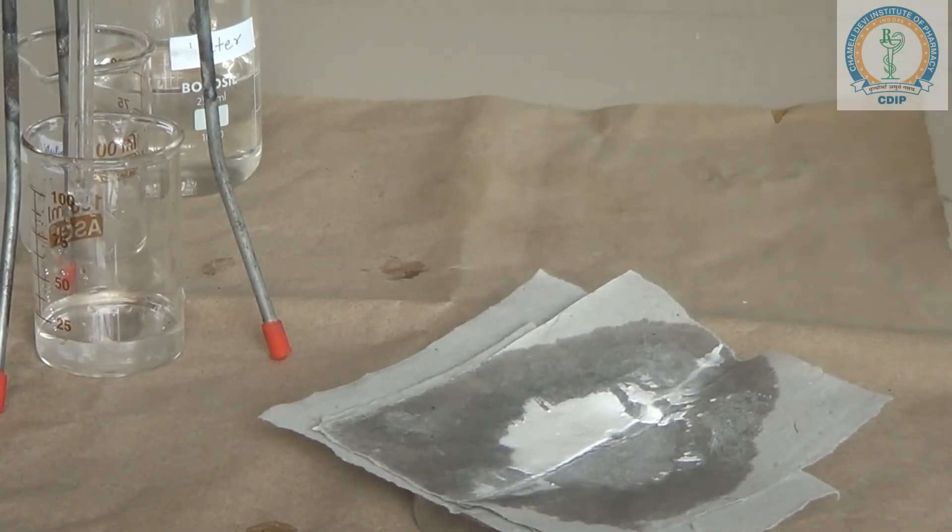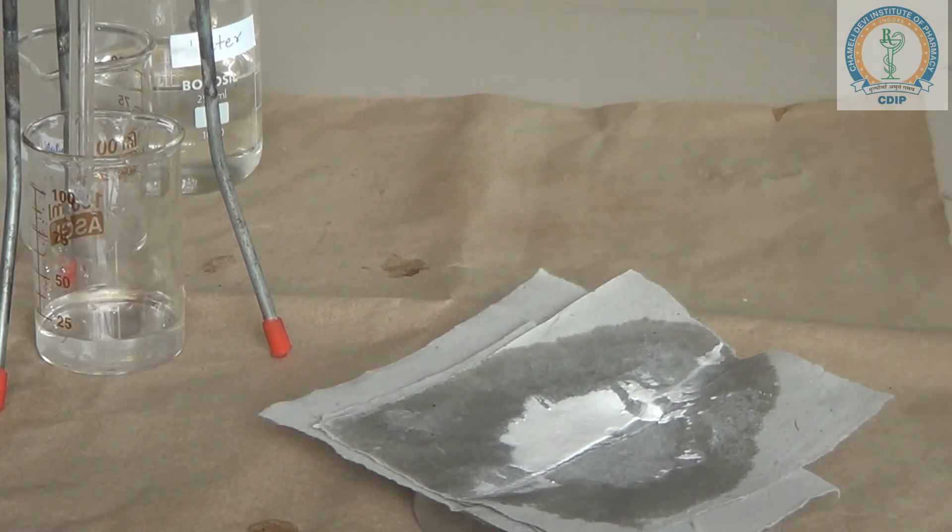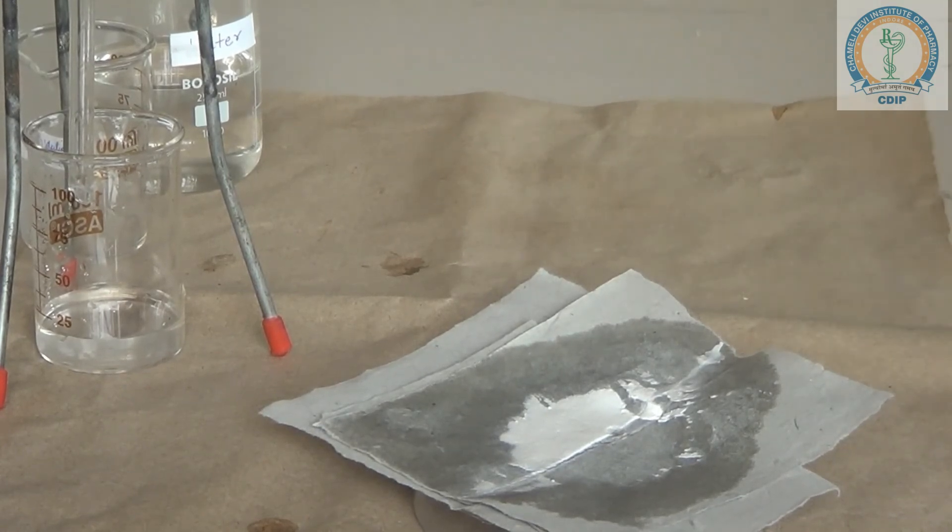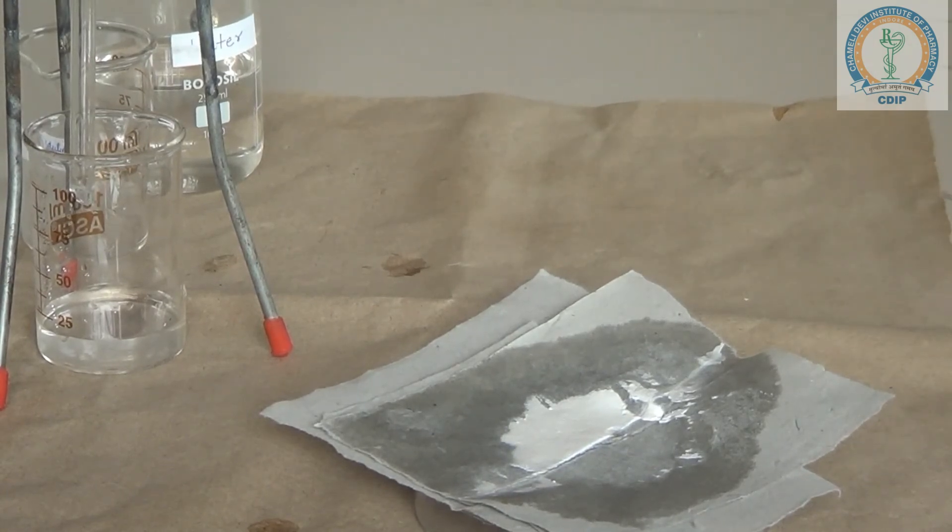And it is basically used as a chalk powder in the schools, as in the classrooms, and it can be used in the plastic industry, paper industry, and medicinally you can use it as an antacid. So this is the preparation of calcium carbonate.